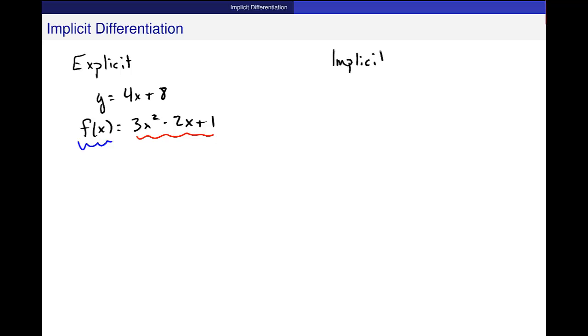And so when I say implicitly defined, it is an equation that looks maybe something more like this. There is a relationship between x and y, but I don't have some output equals.